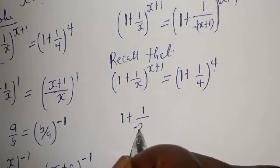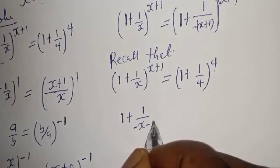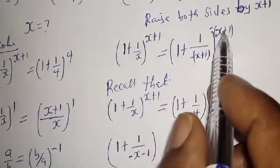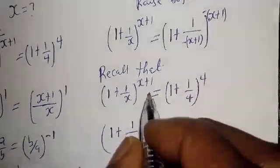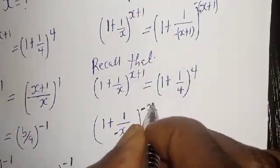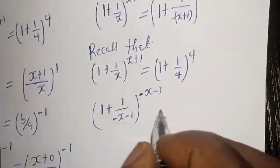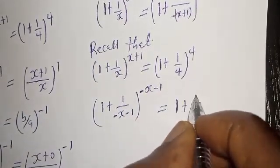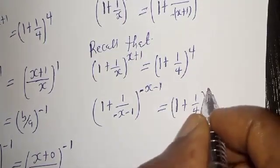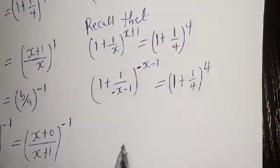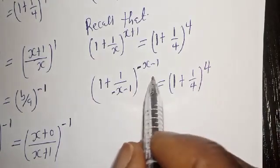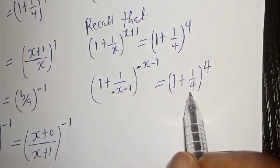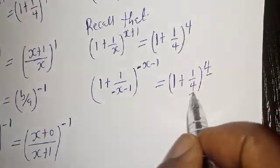We have minus s minus 1 is equal to 1 plus 1 over 4, to the power of 4. Now from here we can compare this. The exponent is equal to 4.